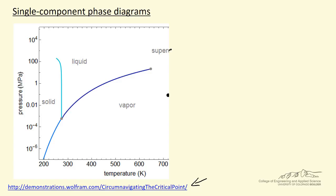On the pressure-temperature diagram, this region here is supercritical, and of course there's no distinct dividing line between liquid, supercritical, and vapor. This is the triple point, and the pressure versus temperature line for liquid-vapor equilibrium is essentially a plot of the saturation pressure as a function of temperature — something that we often model by an Antoine equation.